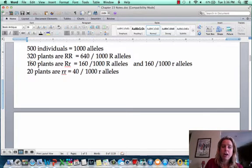If we look at the next one, 160 of the plants are heterozygous, so they have one of each. That means 160 of the R allele and 160 of the r allele.